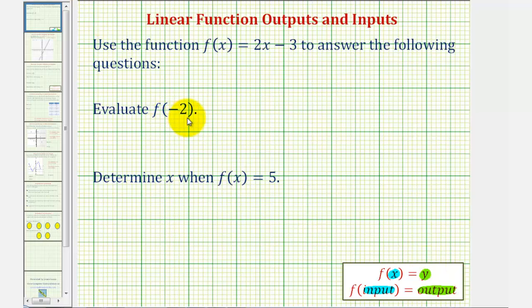To evaluate f of negative two we're given the input or x value of negative two so we'll substitute negative two for x. So f of negative two is equal to two times negative two minus three which would be negative four minus three or negative seven.